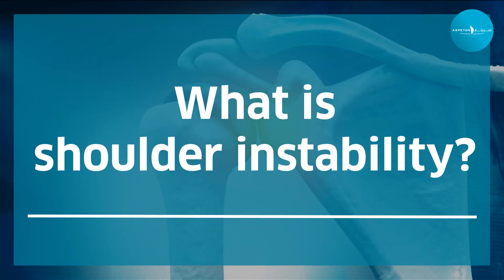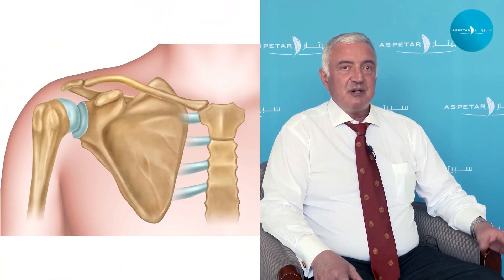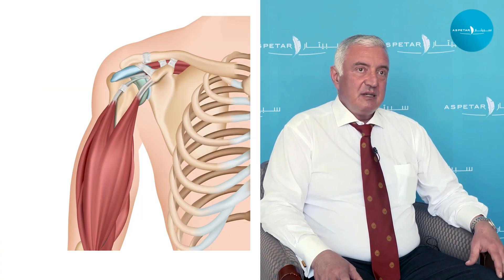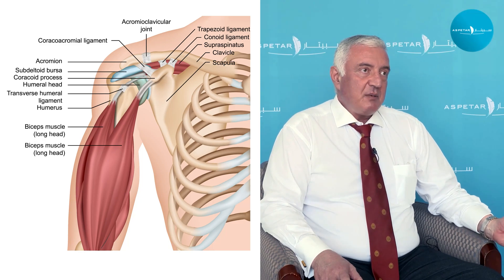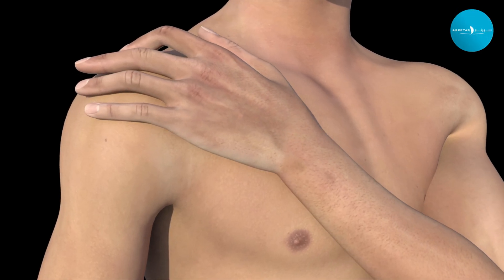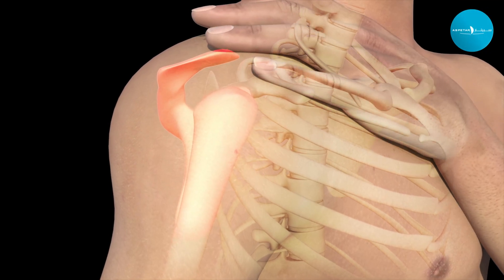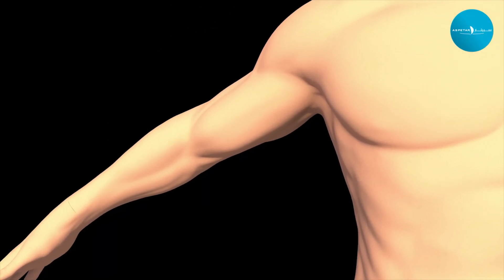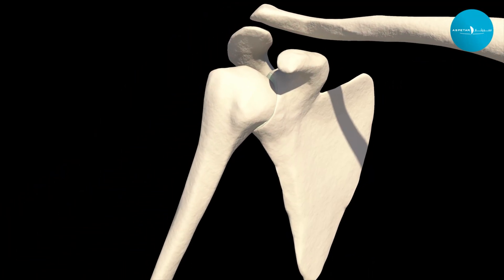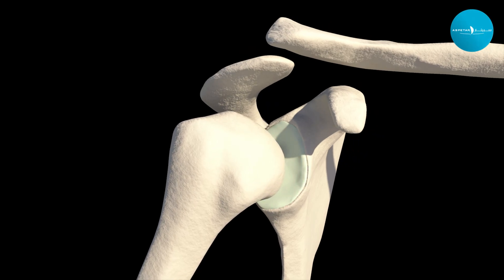Shoulder instability is when this joint, which is actually more complex and created by several joints, becomes unstable. The biggest one is the glenohumeral joint — the articulation between the humeral bone and the scapula — which is supposed to be stable. In some conditions, the shoulder can go out of the joint, or it can go a little bit out, or it can go towards dislocation but be held by the muscles. There are different types of instabilities.